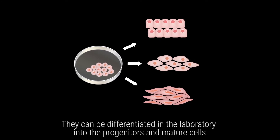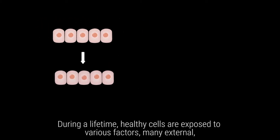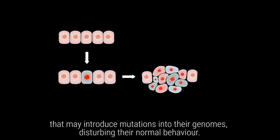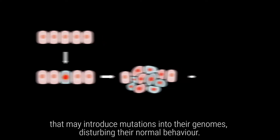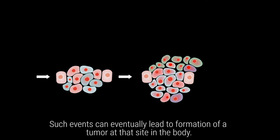Embryonic stem cells can be differentiated in the laboratory into the progenitors and mature cells that form all tissues and organs of the human body. During a lifetime, healthy cells are exposed to various factors — many external — that may introduce mutations into their genomes, disturbing their normal behavior. Such events can eventually lead to formation of a tumor at that site in the body.